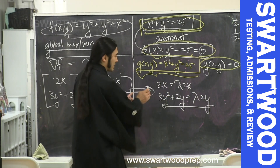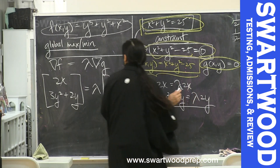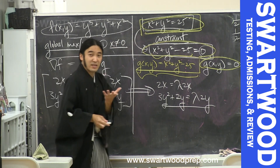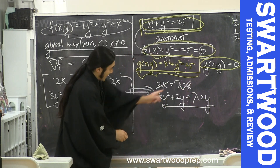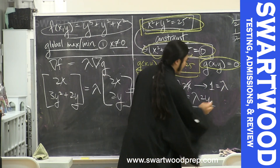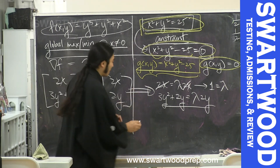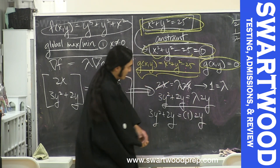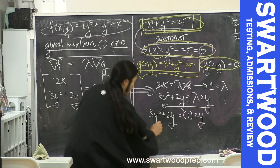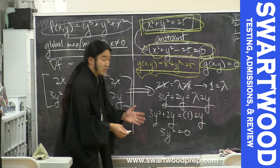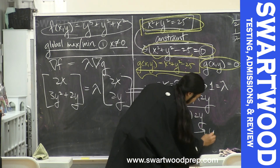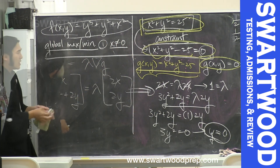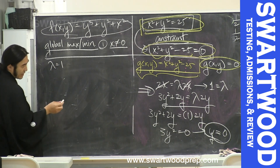Let's solve. Assumption one: x is not equal to zero. If x ≠ 0, we can divide and get lambda = 1. Plugging into the bottom equation: 3y squared + 2y = 1·2y. Subtracting 2y from both sides gives 3y squared = 0, which implies y = 0.